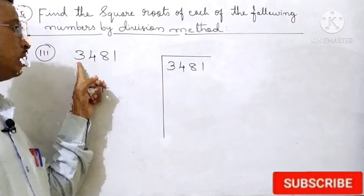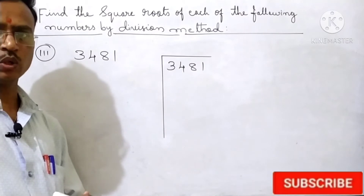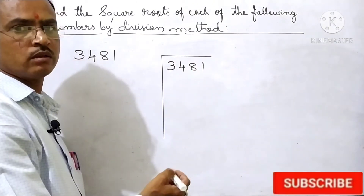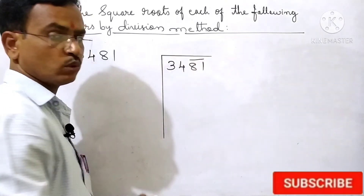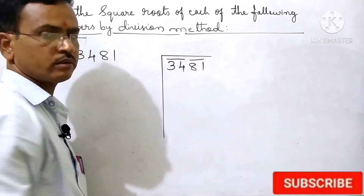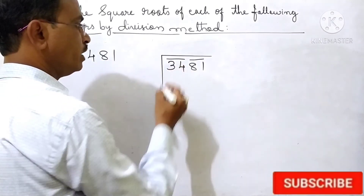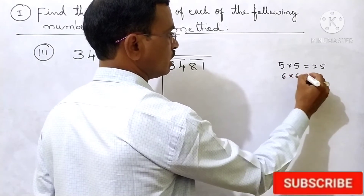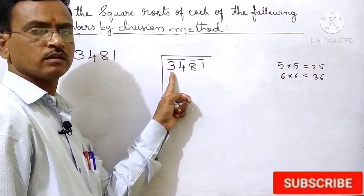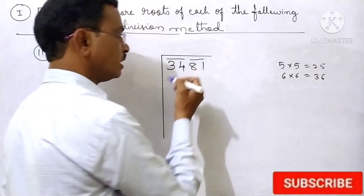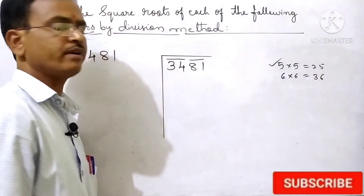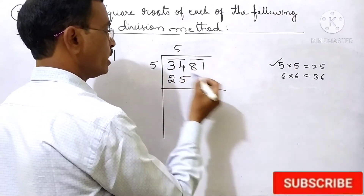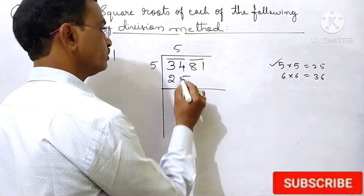Now the next, third question: 3481. Here we should find the square root of 3481 by the division method. Start from the right hand side — 2 digits form one group, that is one pair; the next 2 digits form the second pair. So here we should find the square root of 34. Now 34 is there. 5×5=25, 6×6=36. Since 36 is greater than 34, we take 5×5=25. Subtract 34 minus 25, remaining 9.